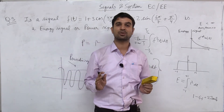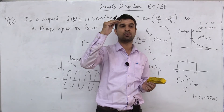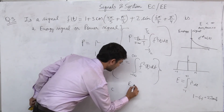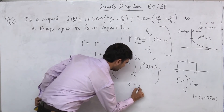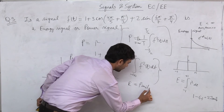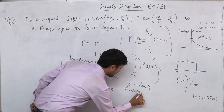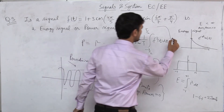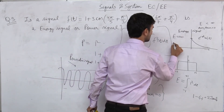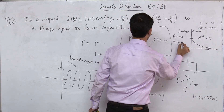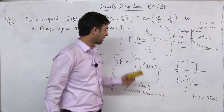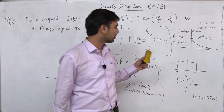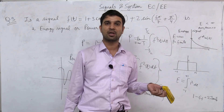All band-limited signals — band-limited meaning signals whose amplitude is finite — are always energy signals. For energy signals, energy is finite and average power is zero. For power signals, energy is infinite and power is finite. This is how we identify whether a given signal is an energy signal or a power signal.